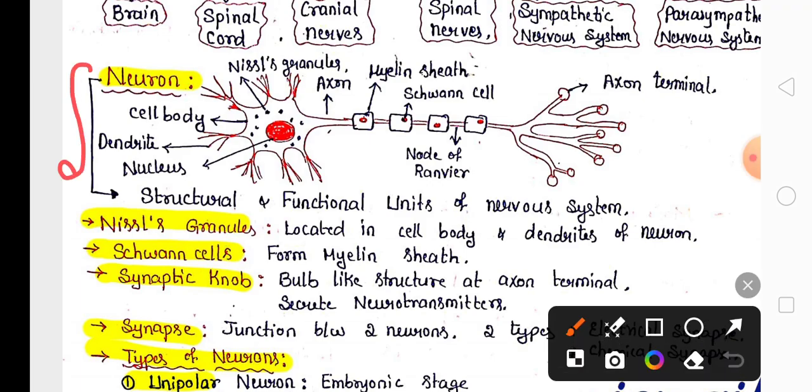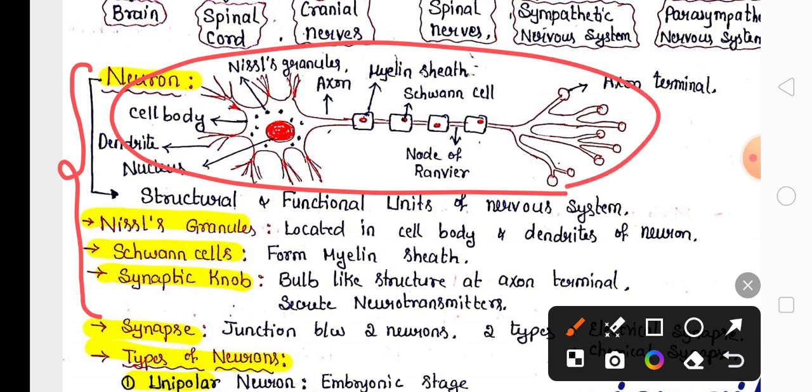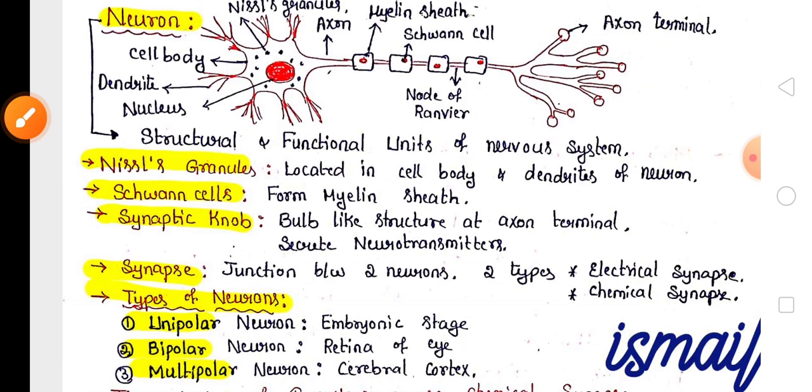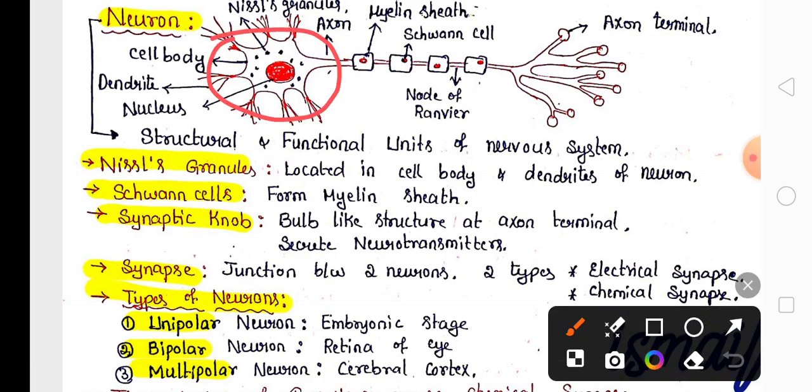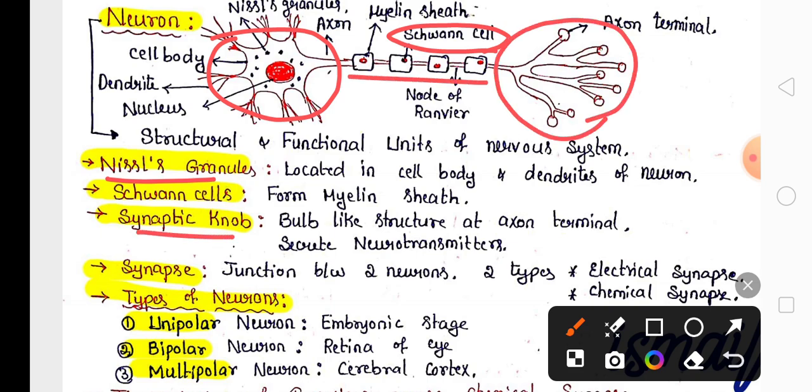For the exam, remember the Neuron definition, structure, and points for 5 marks. Neuron is the structural and functional unit of Nervous System. In the cell body and dendrites, you can find Nissl Granules. Schwann cells secrete Myelin sheath in the axon. The Synaptic Knob at the axon terminal secretes neurotransmitters during transmission of nerve impulses.